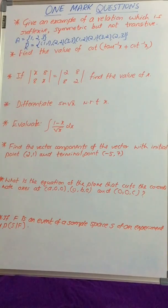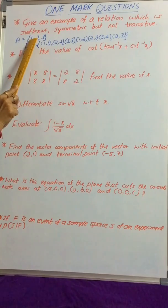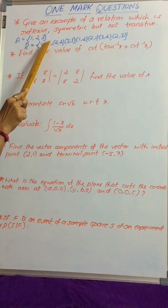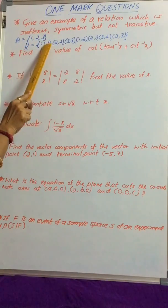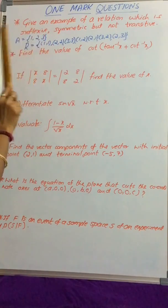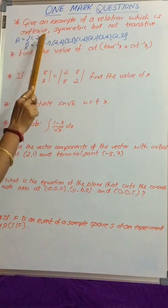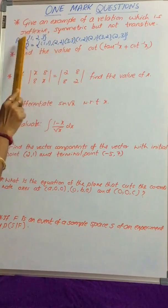It is reflexive because R contains for all elements of A, elements of the form (a,a). That means for 1, (1,1) is there. For 2, (2,2) belongs to R. For 3, (3,3) also belongs to R.